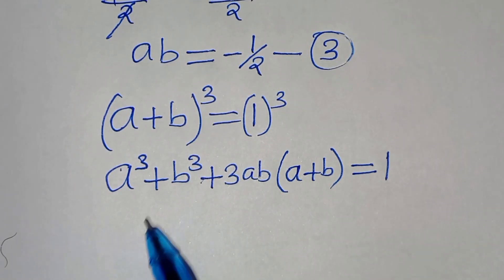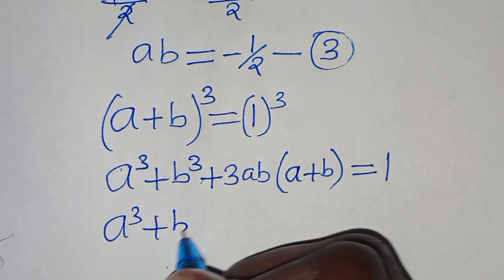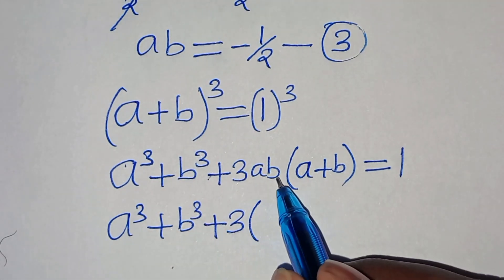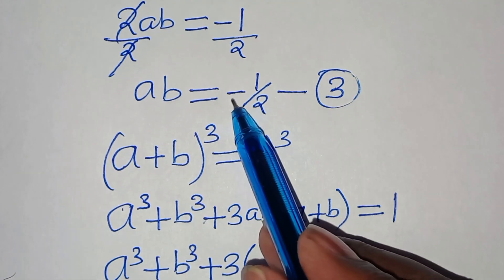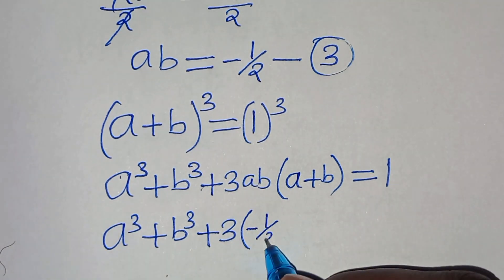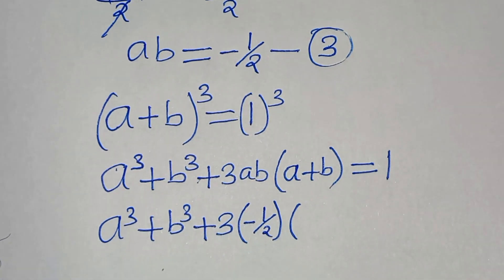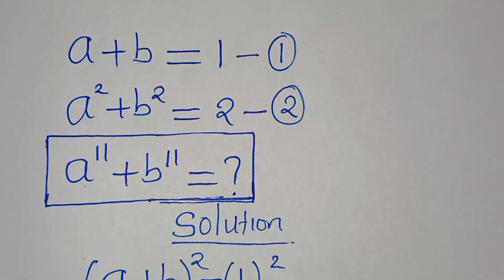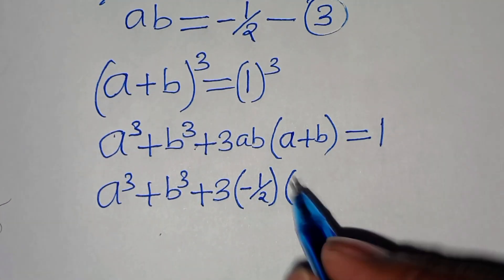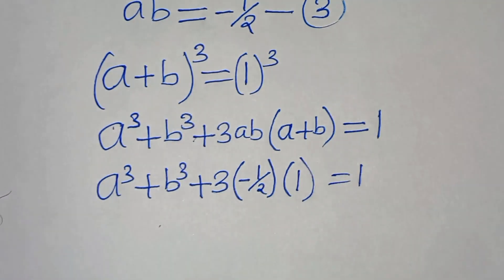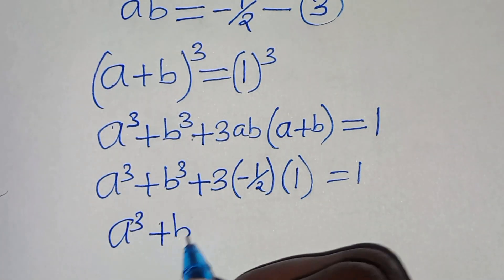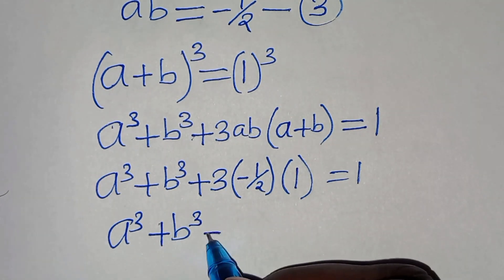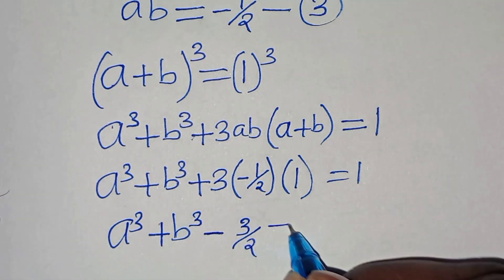We have a cubed plus b cubed, then plus three multiplied by ab. Now ab is equation three which is minus one half, so we have minus one half, multiplied by a plus b. A plus b is equation one which is one, so substituting one: multiplying by one this equals one. So a cubed plus b cubed minus three over two equals one.